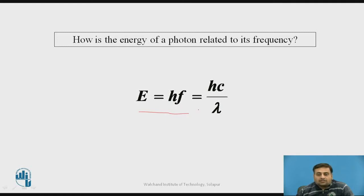Or in terms of wavelength lambda, E equals Hc divided by lambda, where C is the speed of light and lambda is the wavelength of the photon.